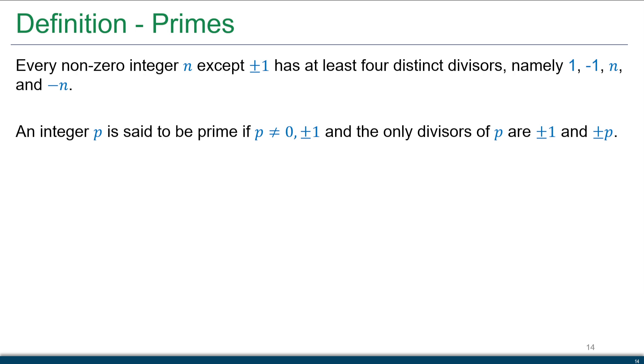So namely, they are one, negative one, n, and negative n. So this is always going to be true. For every non-zero integer n, this is always going to be true. Plus or minus one is going to divide it, and plus or minus itself is going to divide it.